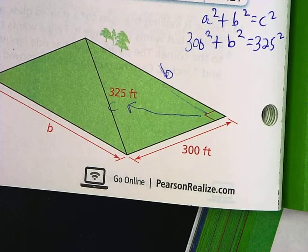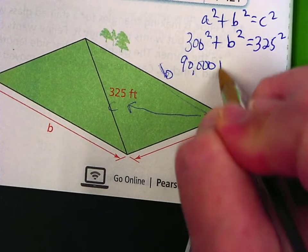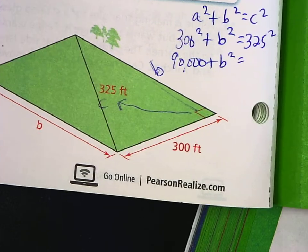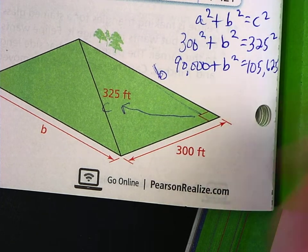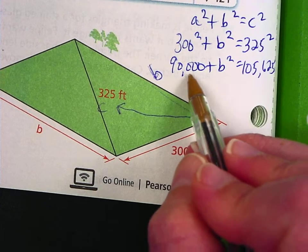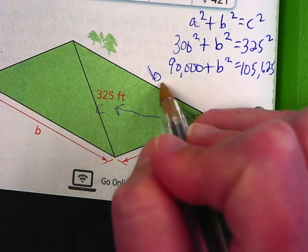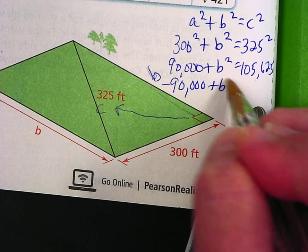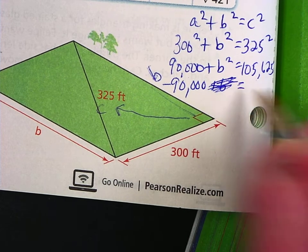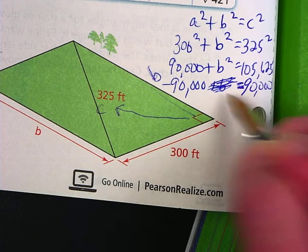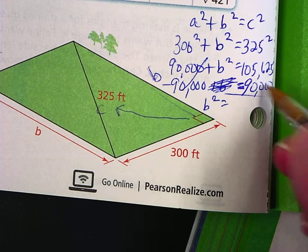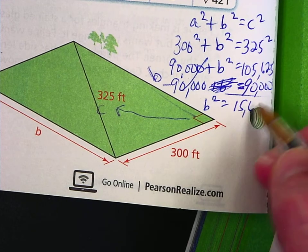Let's solve that. So 300 times 300 is 90,000. 325 times 325 is 105,625. Now this is a good reminder because these are on opposite sides. You have to subtract, you have to get those two together on the same side. So we're going to subtract 90,000 from this side. So B squared is, so this takeaway, this is 15,625.